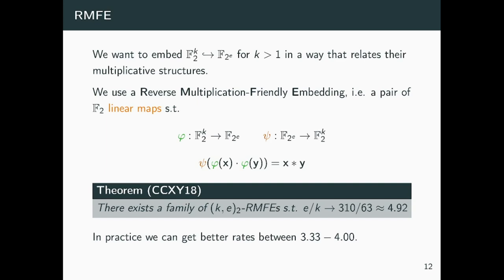I will later specify how this works. For a moment, I wanted to focus on the fact that, thanks to a theorem of Cascudo, Cramer, Xing and Yuan in Crypto 2018, we know that there exists a family of such embeddings where we can embed k bits in a field that is roughly five times as large. In fact, if we use specialized constructions, we can even get better rates, obtaining essentially embeddings that expand the witness only by a factor of four at most. This is significantly better than the naive approach, where we were getting essentially a factor of 128.